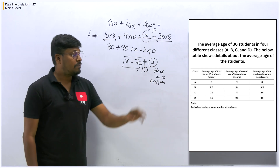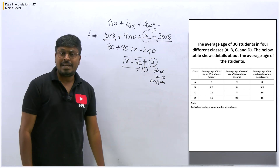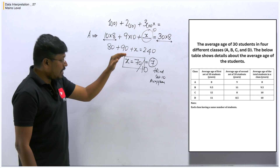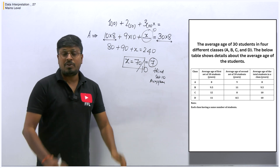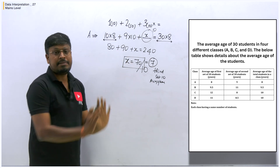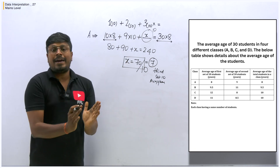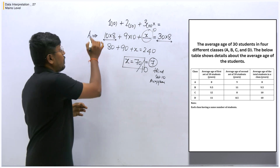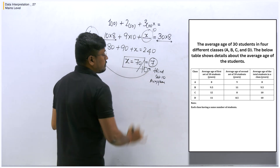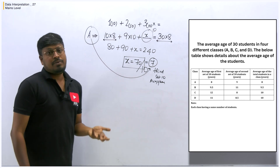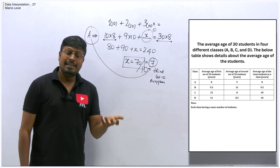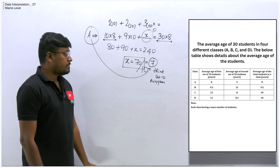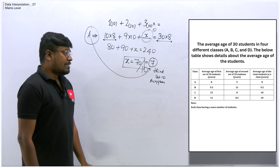We found the third set of 10 students for class A with average age 7. Similarly, we have to find the missing third set average for classes B, C, and D, because one value is completely missing in the chart for each class. After finding all missing chart values, we can then proceed to solve the questions.